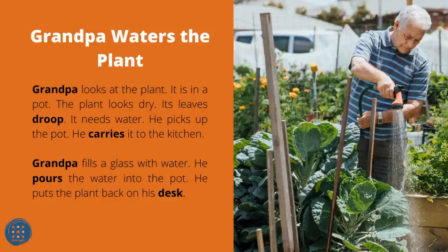Grandpa Waters the Plant. Grandpa looks at the plant. It is in a pot. The plant looks dry — its leaves droop. It needs water. He picks up the pot and carries it to the kitchen. Grandpa fills a glass with water and pours the water into the pot. He puts the plant back on his desk.